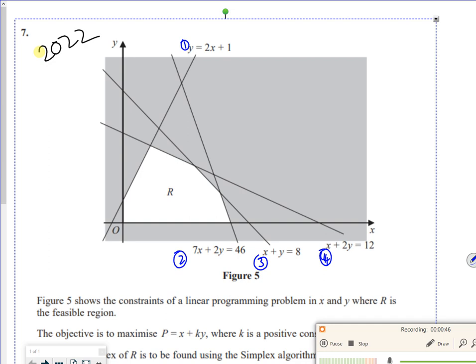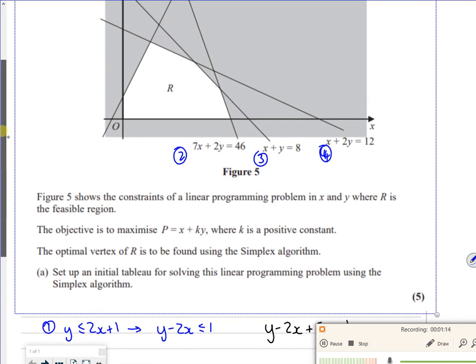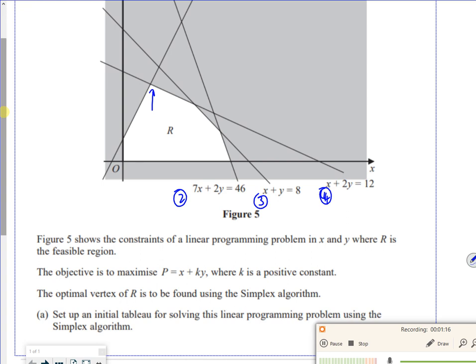So for the first one, I had y is less than or equal to 2x plus 1, which is kind of like y minus 2x is less than or equal to 1. So then if I change it into something for Simplex, I've got y minus 2x plus s1 is equal to 1. Remember, you're adding on that value so you can definitely move it up to the line.